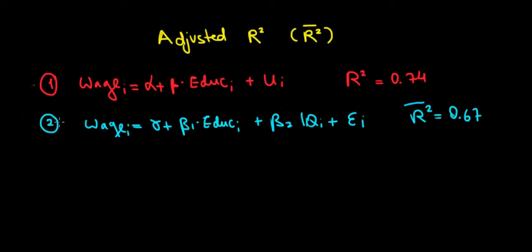Now suppose we have a second model, also the relationship between wage and education, but now we add the effect of IQ on wage. We have the adjusted R-square which equals 0.67, so 67% of the variation in wages is explained by our model.